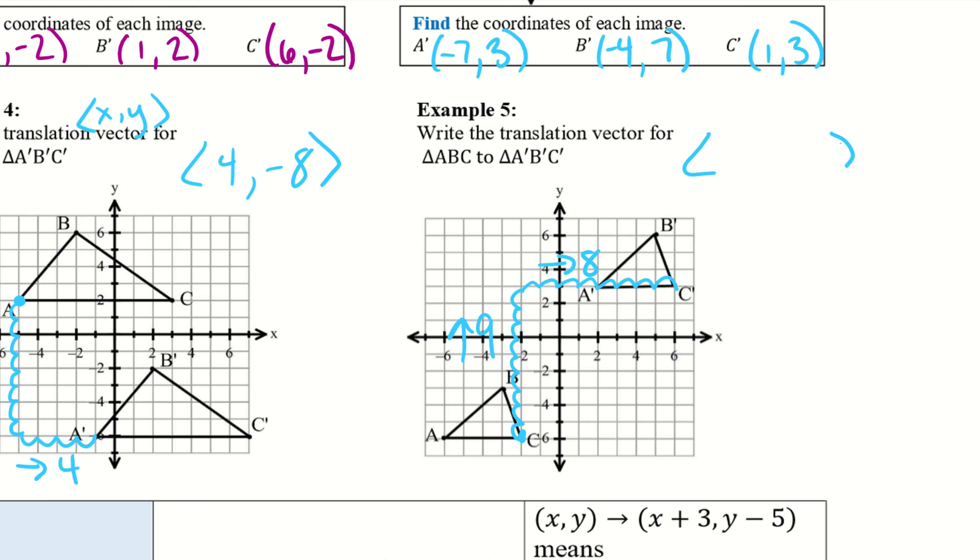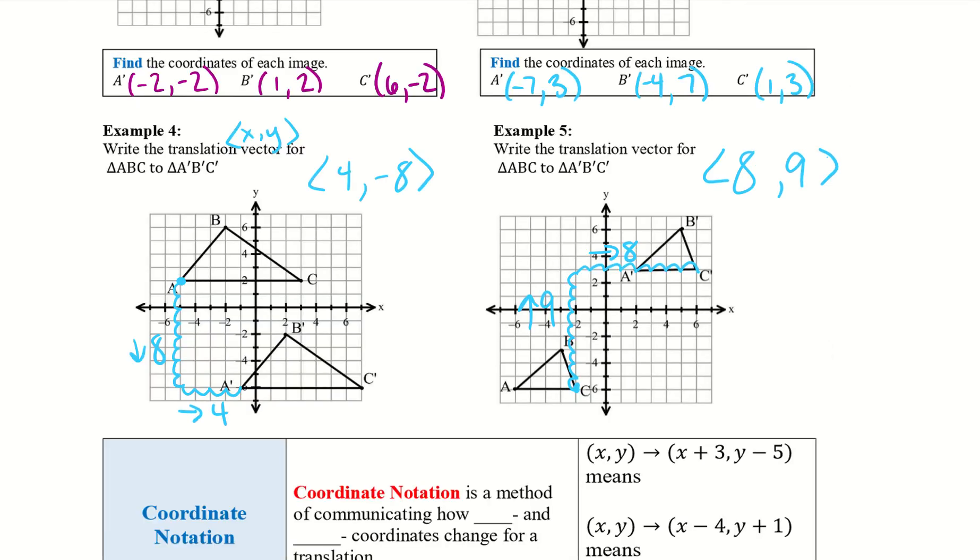So remember we do X and then Y, so left, right, and then our up, down. So we went right 8, so that's positive 8. And then we went up 9, so that's a positive 9. So our vector from our pre-image to our image is 8, 9.